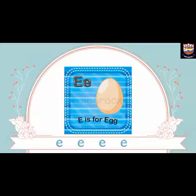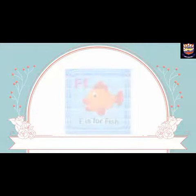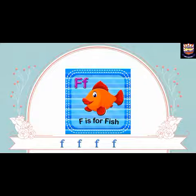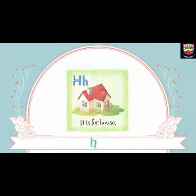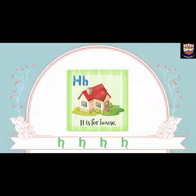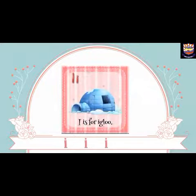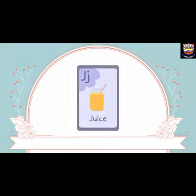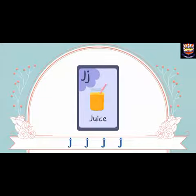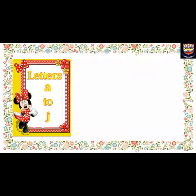F is for fish — F, F, fish. G is for gorilla — G, G, gorilla. H is for house — H, H, house. I is for igloo — I, I, igloo. J is for juice — J, J, juice. Letters A to J with vocabulary and sound have been taught.